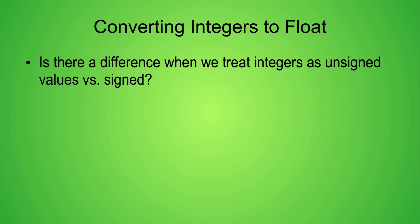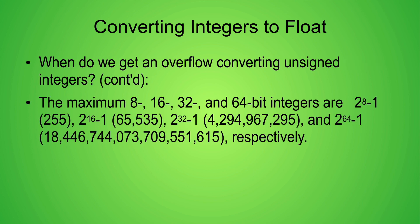What about when we're converting unsigned integers to the IEEE 754 floating point formats? The largest possible integers for the 8, 16, 32, and 64-bit integers are 2 to the 8th power minus 1, 2 to the 16th power minus 1, 2 to the 32nd power minus 1, and 2 to the 64th power minus 1.